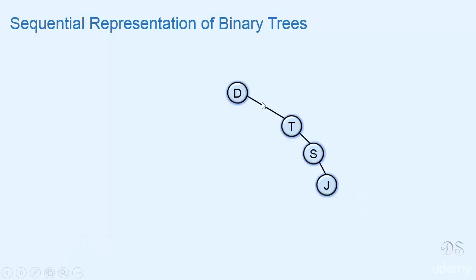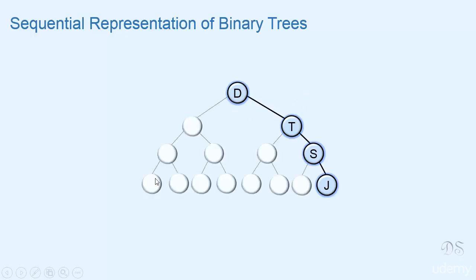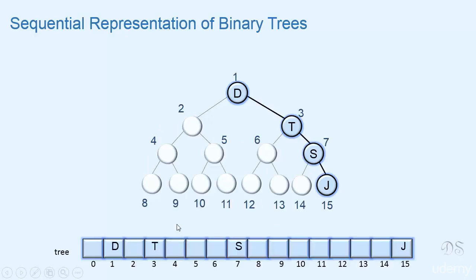Now let's represent this tree using an array. We consider it as a complete binary tree with some missing nodes. These are the missing nodes, and the array representation for this tree is this. We can see that lots of array locations are wasted in this case.